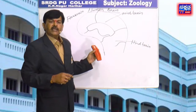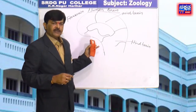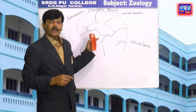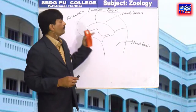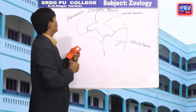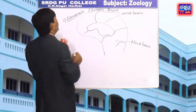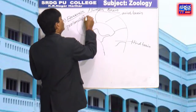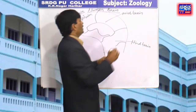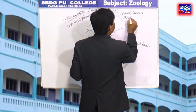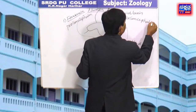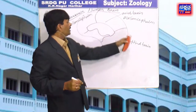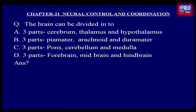The central nervous system consists of brain and spinal cord. The brain is made up of mainly three parts. The first part is called the forebrain, also called the prosencephalon. The midbrain is called the mesencephalon, and the hindbrain is called the rhombencephalon. Therefore, the right answer is D.